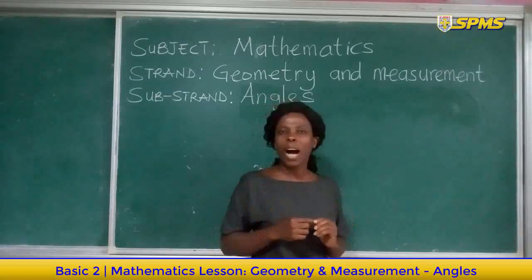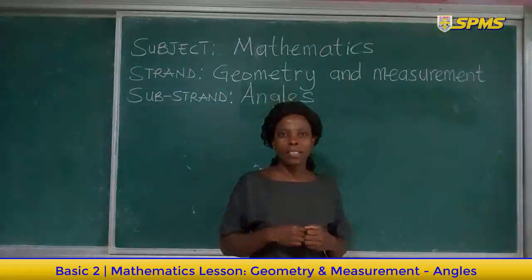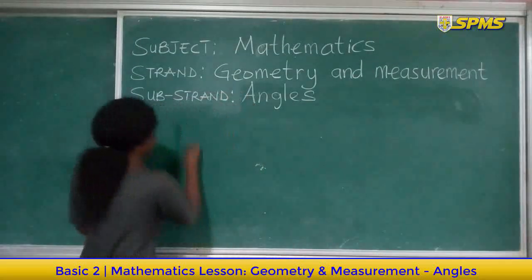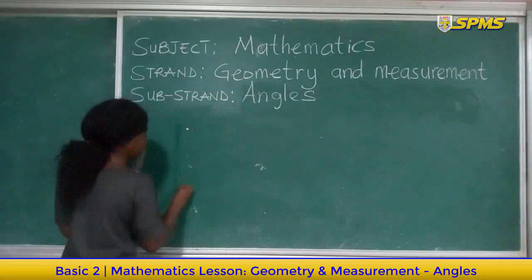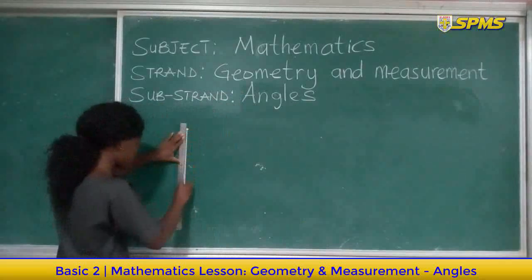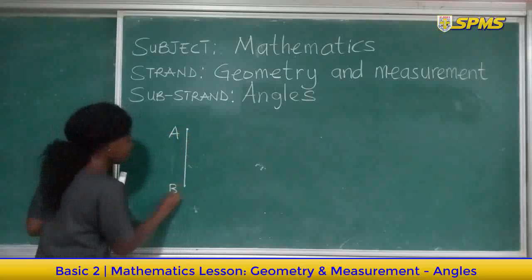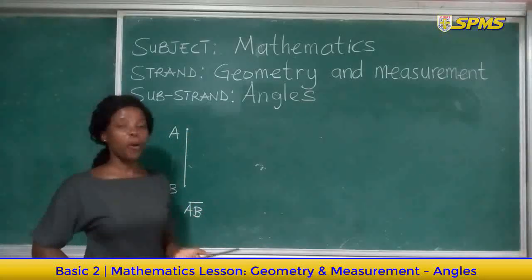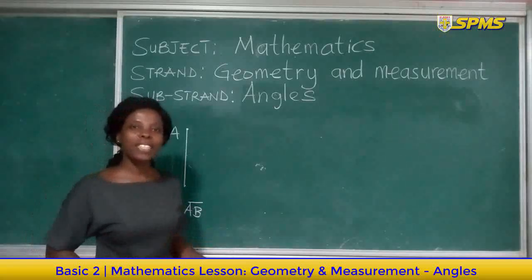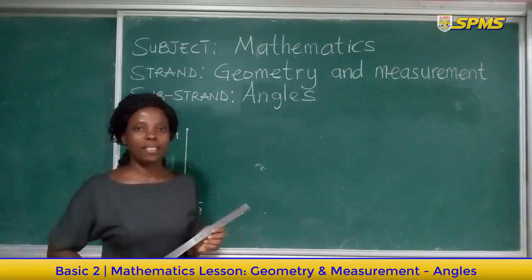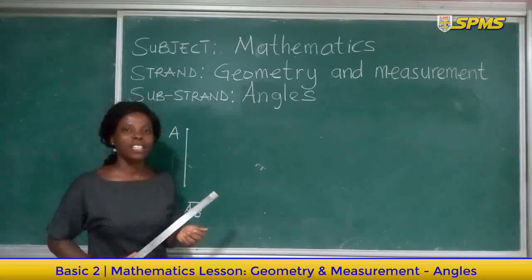What then is angle? How do we get our angle from line segments? For example, I'm going to draw line segment A. Line segment A. Do I have an angle? No. You remember when we're treating our keywords we said angle is the point where two or more lines meet.